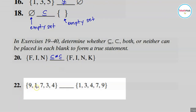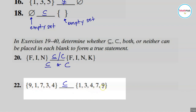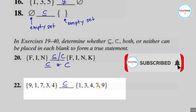For number 22, we have {9, 1, 7, 3, 4} compared to {1, 3, 4, 7, 9}. As you notice, all the elements here are exactly the same as the elements there. This is exactly the same set, so I cannot say it is strictly less than the other — they are actually equal sets.